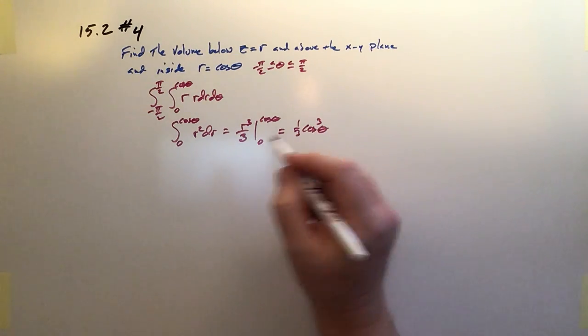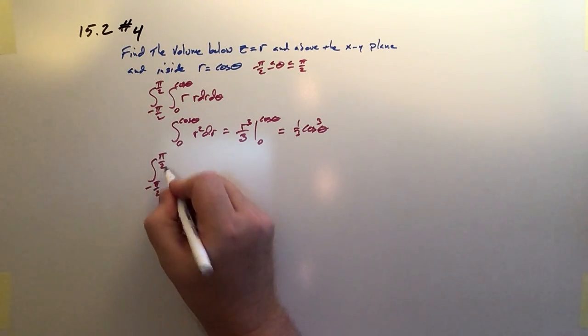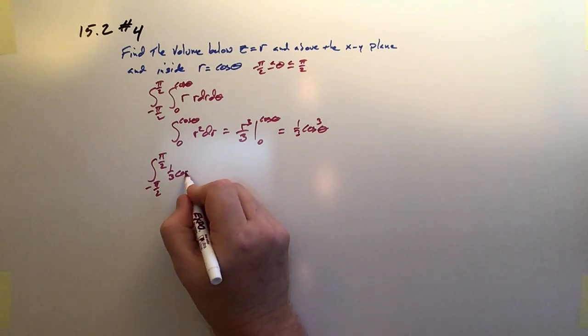And then that becomes the argument for the outer one. So this is negative pi over 2 to pi over 2, and it's one third of cosine cubed theta d theta.